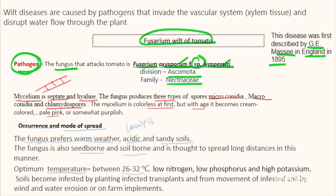The optimum temperature has been found to be between 26 to 32 degrees Celsius — at this temperature the fungus is most active and grows most profusely, so areas with this temperature will be worst affected. It was also found that low nitrogen, low phosphorus, and high potassium content of soil favors growth of the fungi. When temperature was made very high or very low, the fungus was not able to work properly.